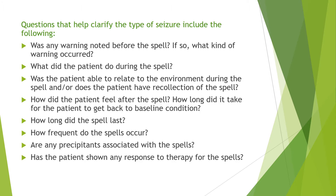What are the questions necessary to ask in history taking? Was any warning noted before the spell? If so, what kind of warning occurred? What did the patient do during the spell? Was the patient able to relate to the environment during the spell? Does the patient have recollection of the spell? How did the patient feel after the spell? How long did it take for the patient to get back to baseline condition? And how long did the spell last?